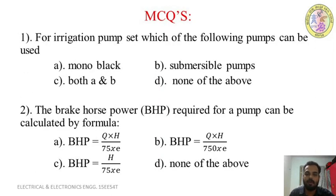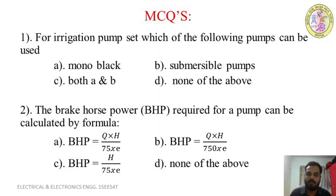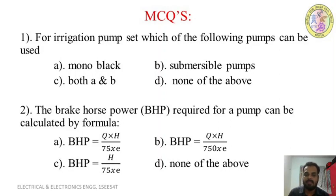MCQ 1: For an irrigation pump set, which of the following pumps can be used? A) Monoblock, B) Submersible pumps, C) Both A and B, D) None of the above. Answer: C — Both A and B. Both monoblock and submersible pump sets can be used for irrigation purposes.